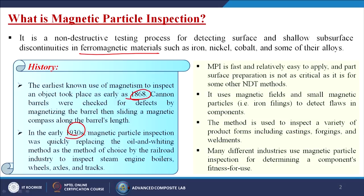In the early 1930s, magnetic particle inspection was quickly replacing the oil-and-whitening method as the method of choice by the railroad industry to inspect steam engine boilers, wheels, axles and tracks. For railways, we continuously monitor this kind of crack at railway wheels or tracks, because when there is a certain change in temperature, the tracks or wheels can get certain damage and defects may occur.